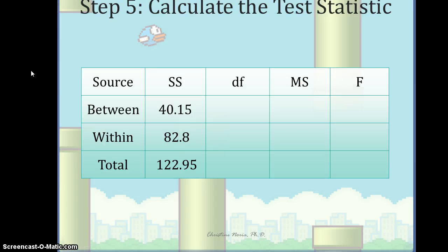This is where we left off in the last video. We had just finished computing all of our sums of squares — the sums of squares between, within, and total. You will note that if you add the sums of squares between and within, you would in fact get the sums of squares total.